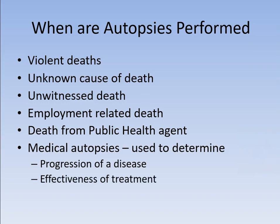If this person had been treated — say it's cancer — and had been treated for a long period of time with particular chemicals, they can do an autopsy to determine: was the treatment effective? Did it do anything? Did it slow the progression? Did it damage other parts of the body? Medical autopsies are often voluntary — they go to the next of kin and ask to do an autopsy to find out what happened with the disease and how the treatment worked.